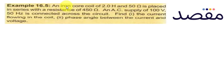We have a question here. An iron core coil of 2 henry and 50 ohms is placed in series with a resistance of 450 ohms, and an AC supply of 100 volts having frequency 50 hertz is connected across the circuit. Find the current flowing in the coil and phase angle between the current and the voltage.